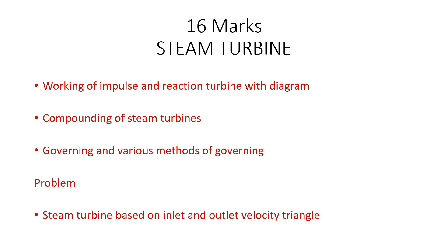Governing methods — nozzle governing and bypass governing — are frequently asked in exams. For problems in steam turbines, draw the velocity diagram for impulse and reaction turbines, use geometry to find unknown angles, then find work done, tangential whirl velocity, work done, and power. Inlet angle is given; find the outlet angle and unknown values using the velocity diagram.